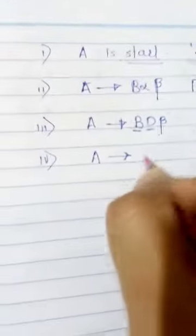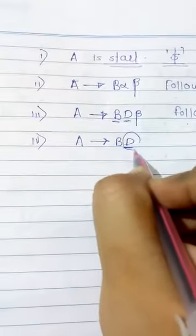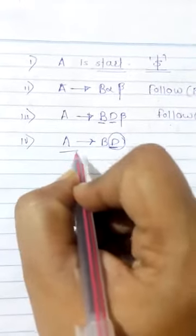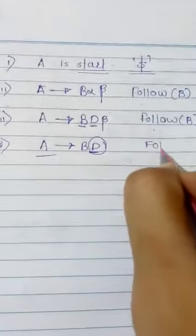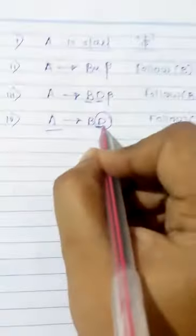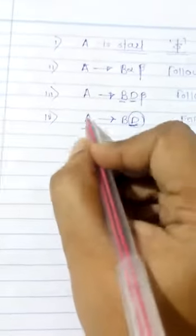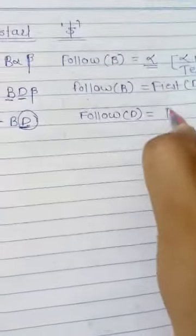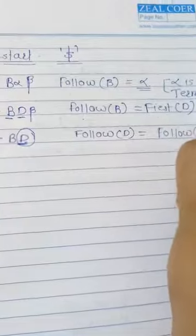Fourth rule: if you have A → B D and D is the last non-terminal — nothing follows D — then FOLLOW(D) = FOLLOW(A). The formula says: if D is the last non-terminal in a production rule, you always consider FOLLOW(D) equal to FOLLOW of its left-hand side non-terminal.